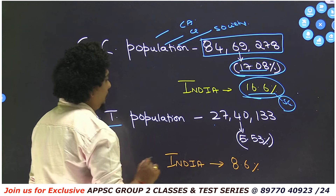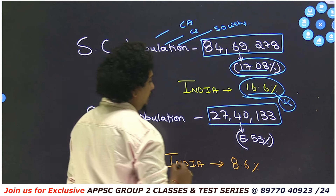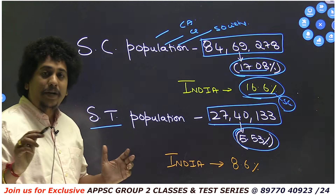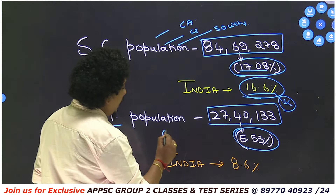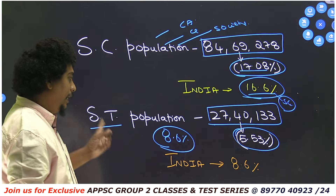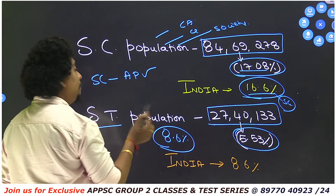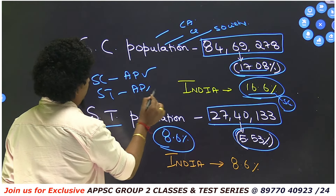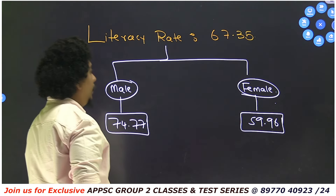For ST (Scheduled Tribe) population: the figure is 27,40,133, which is 5.53% of the total Andhra Pradesh population. Whereas India's average ST population is 8.6%. So compared to India, Andhra Pradesh's ST population percentage is lower.